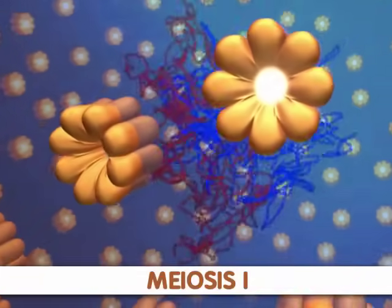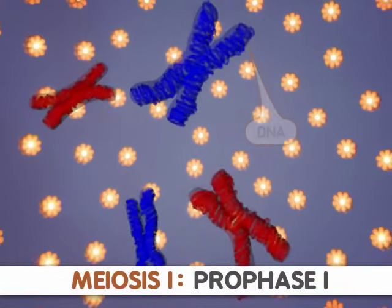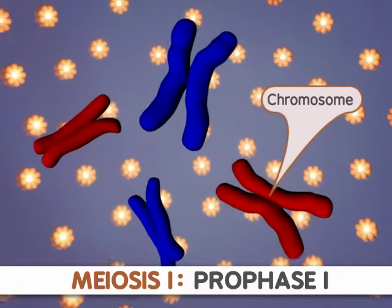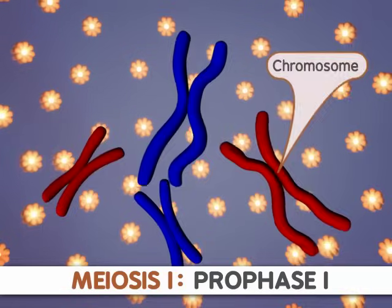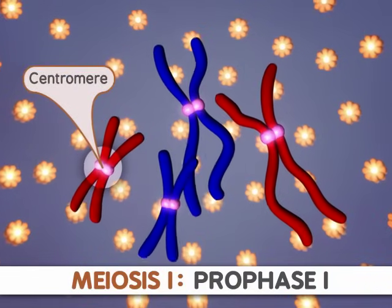Meiosis begins with prophase I. In this stage, the DNA condenses to form chromosomes. Here we see the duplicated sister chromatids join together at the centromere. They stay fused at the centromere throughout meiosis I.